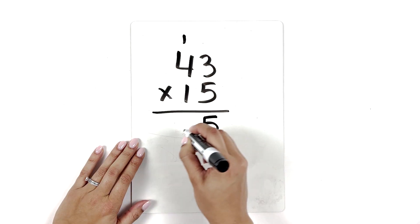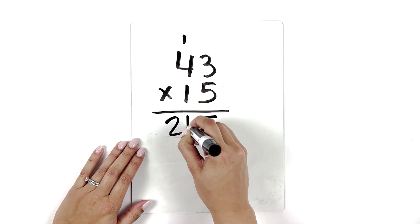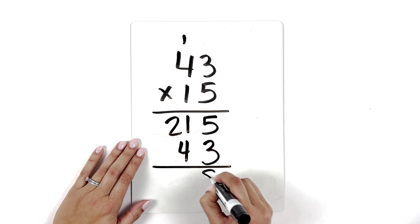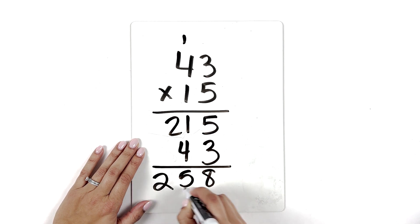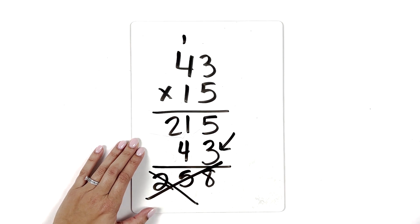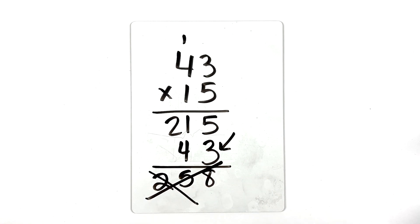A lot of times when students are working with the standard algorithm for multiplication, they end up with unreasonable answers because when they move over to the tens place, they forget that they're multiplying by a digit in the tens place. My takeaway from this teacher's idea is to be more intentional with pointing out the information gained from that top left corner of the area model and refer back to it as needed with students.